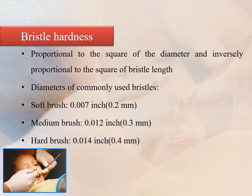Bristle hardness is proportional to the square of the diameter and inversely proportional to the square of bristle length. The diameters of commonly used bristles are 0.007 inches for soft brushes, 0.012 inches for medium brushes, and 0.014 inches for hard brushes.